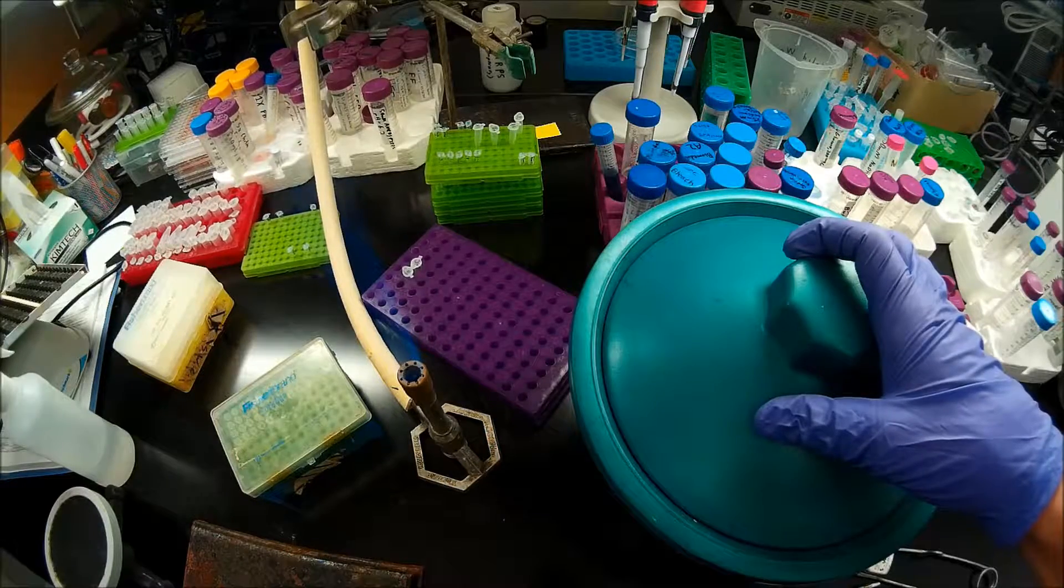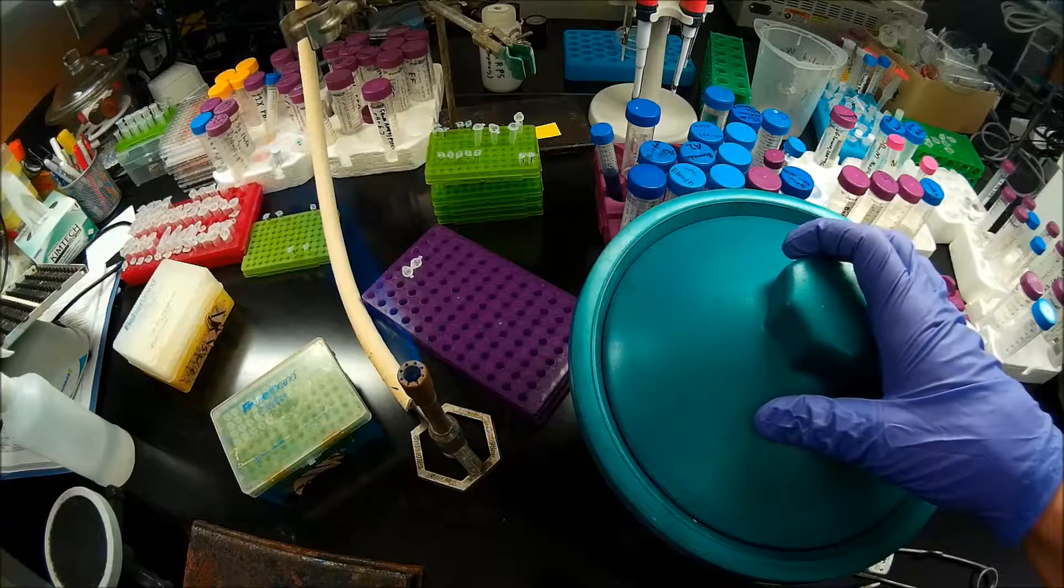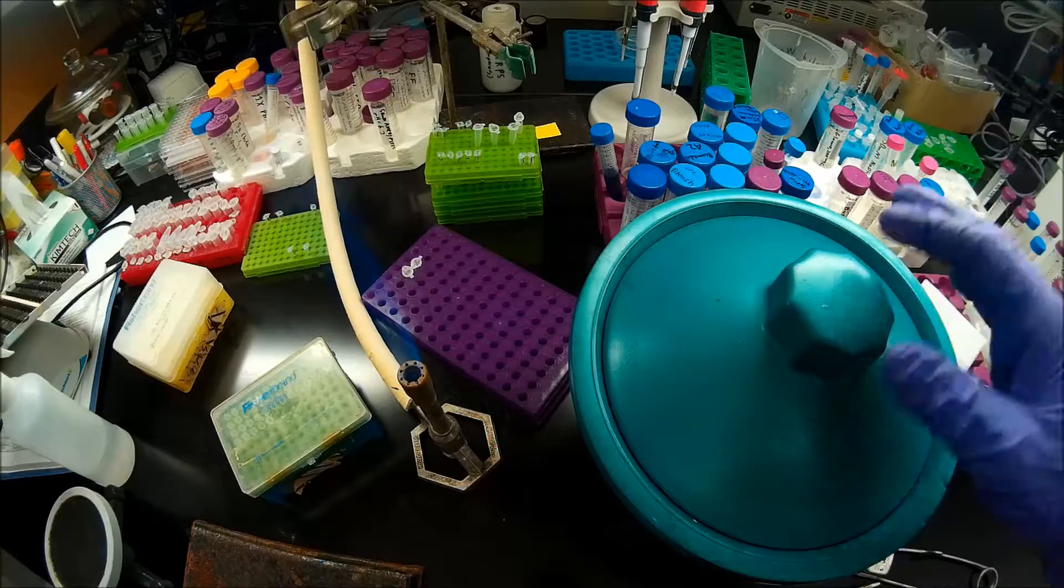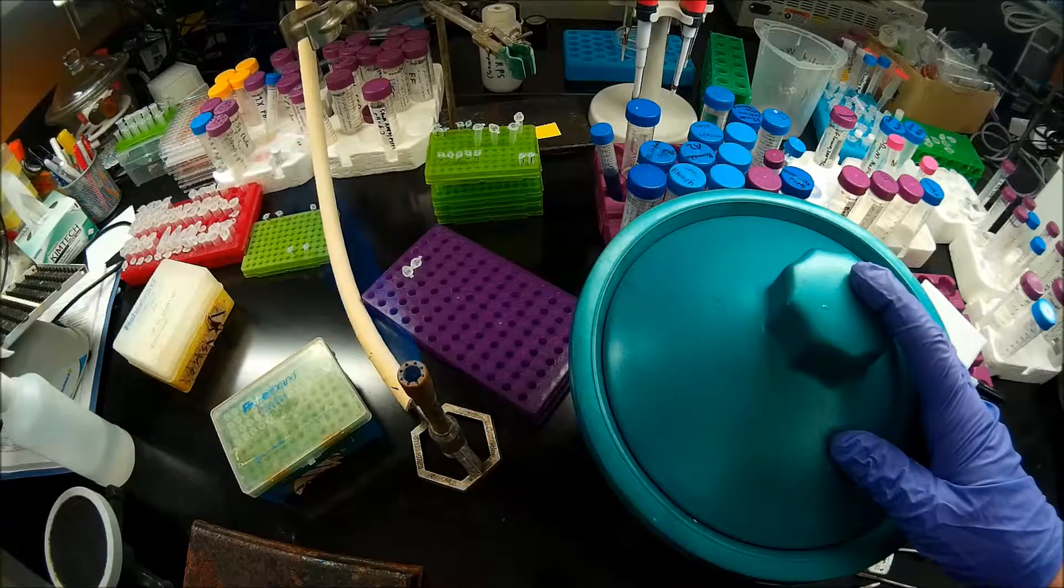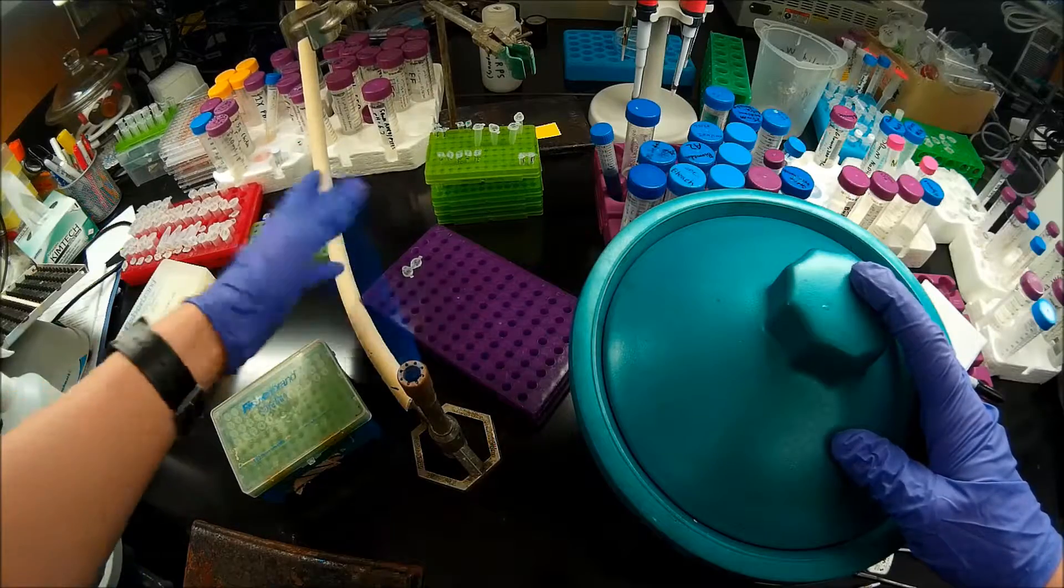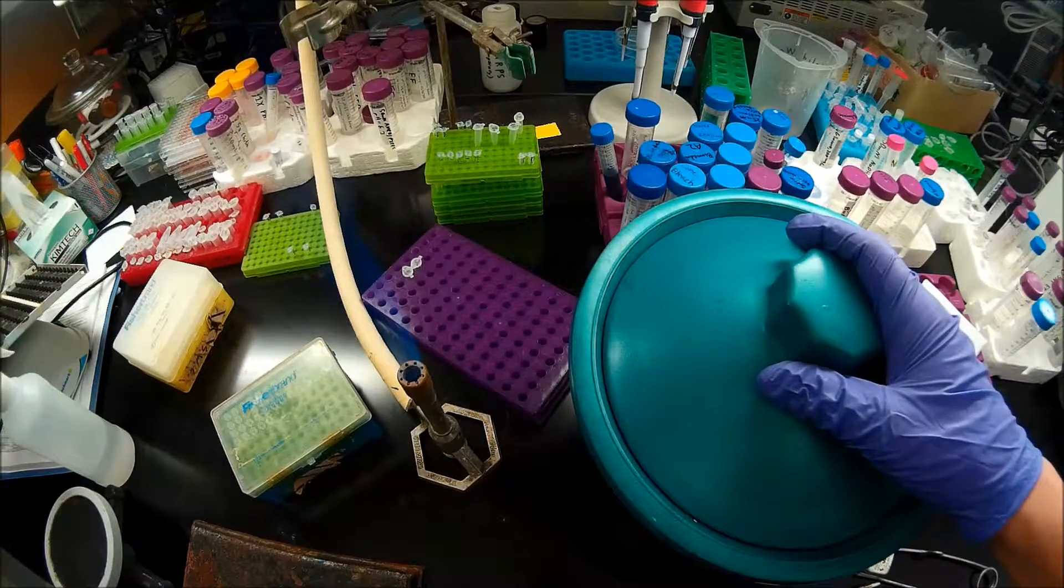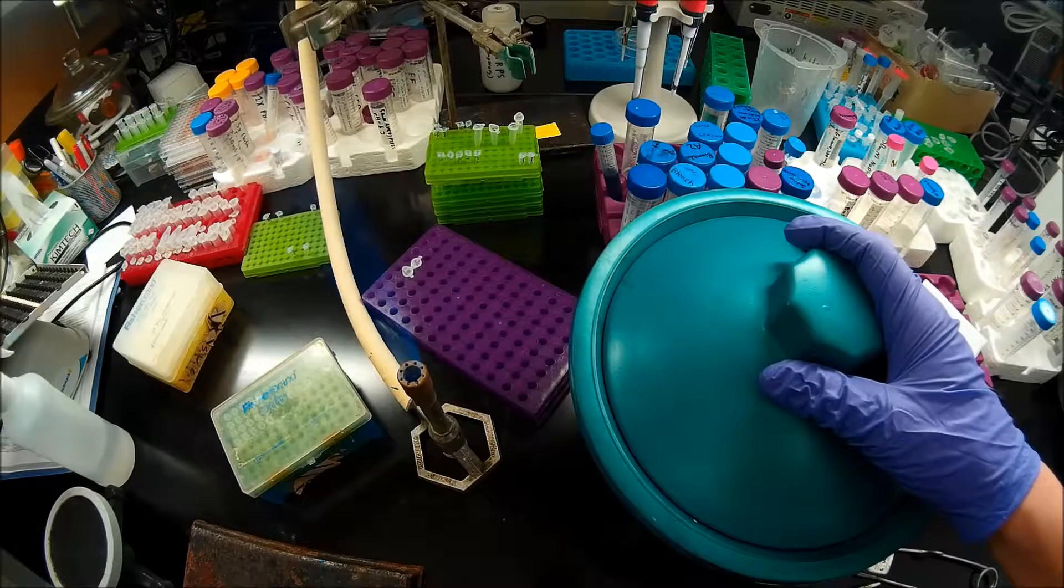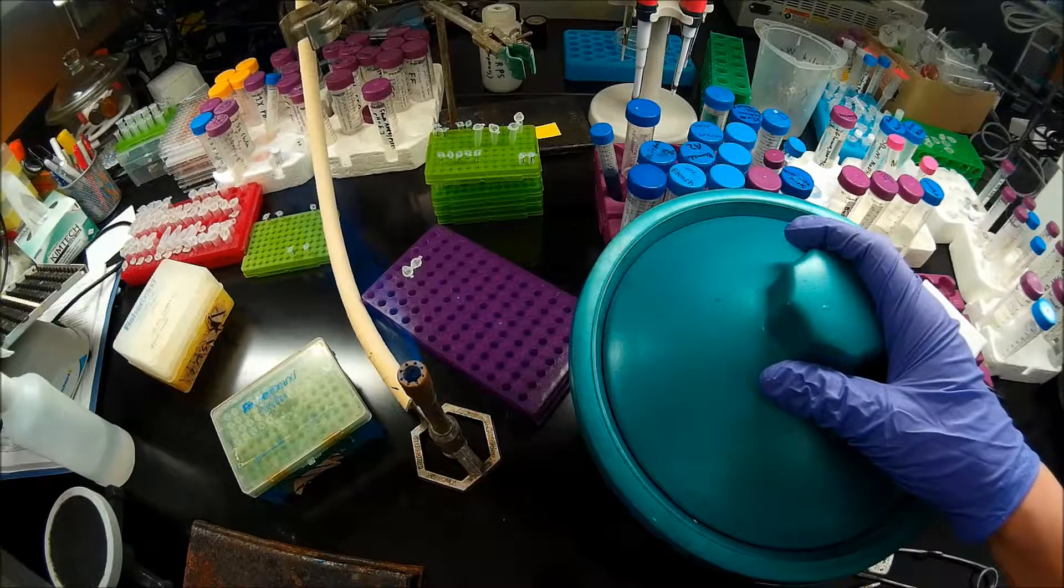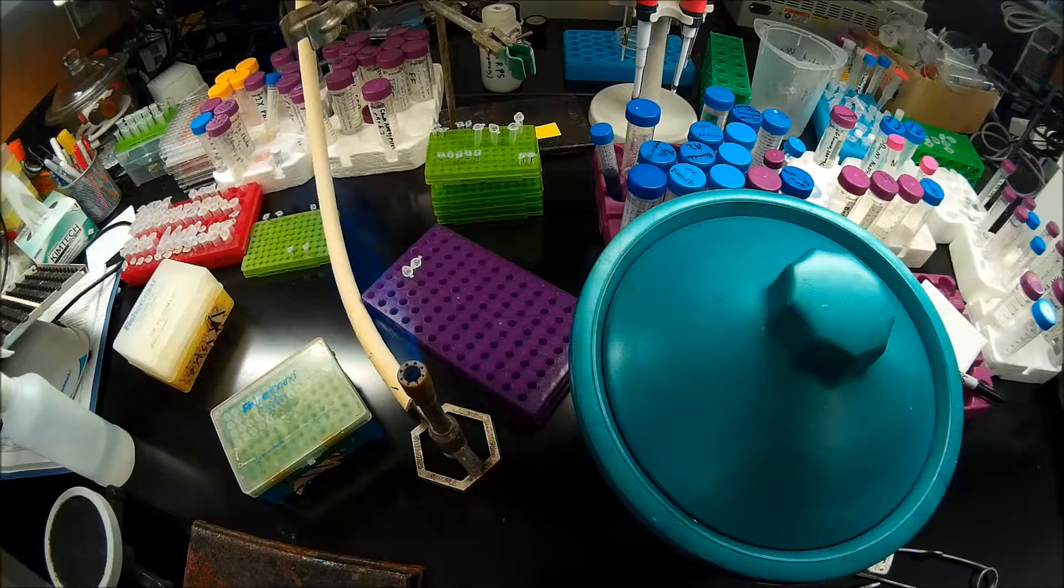So if you were transforming with whole plasmid from an average mini prep, about 100 nanograms per microliter, and you used 5 microliters of your whole plasmid, you would get an outrageous number of colonies. So you'll want to calculate how much DNA you use based on the transformation efficiency of your cells and the concentration of your DNA samples.